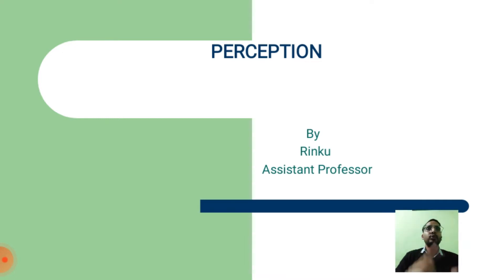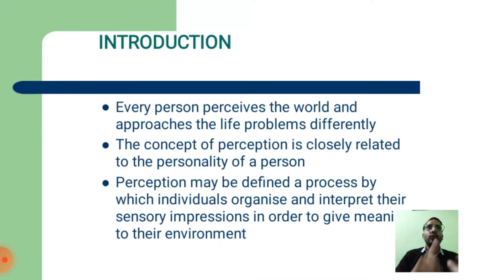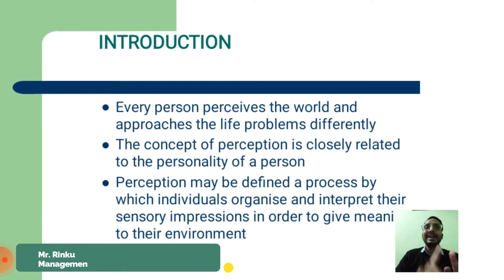Perception is defined as the process through which information from the outside environment is selected, received, organized, and interpreted to make it meaningful for us. This input of meaningful information results in decision and action. Every person perceives the world and approaches life problems differently. The concept of perception is closely related to the personality of a person.